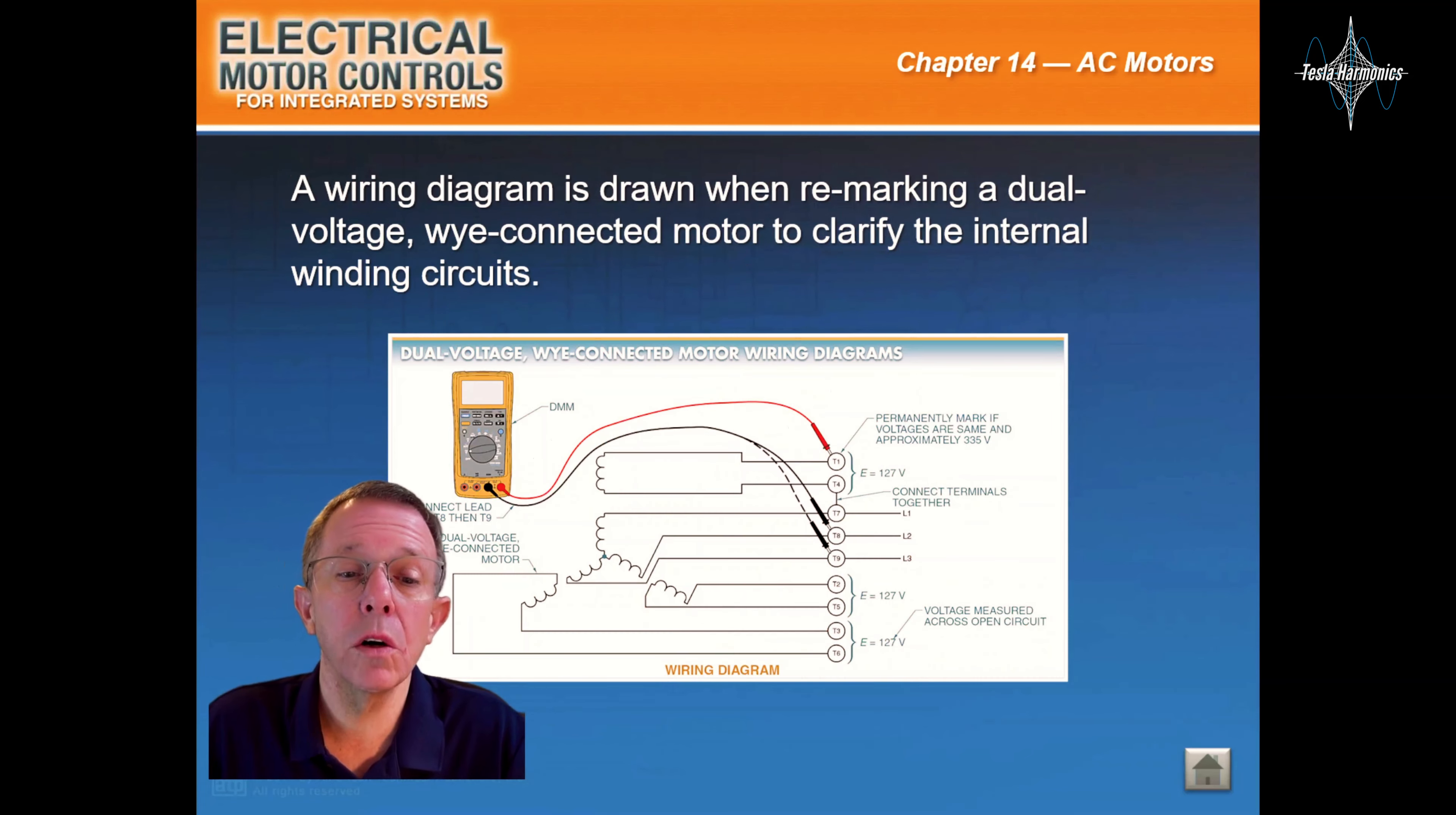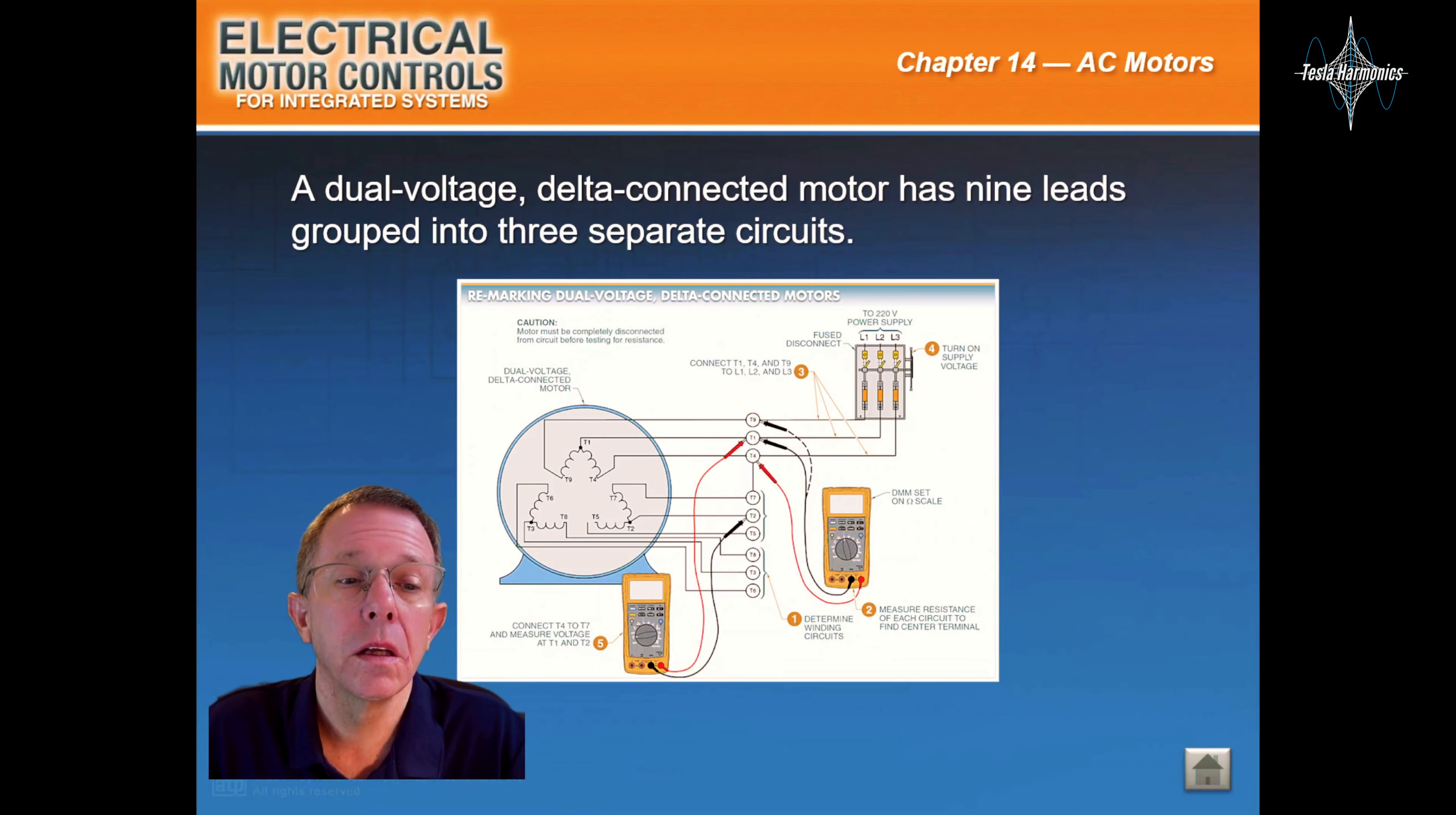A wiring diagram is drawn when remarking a dual voltage wye-connected motor to clarify the internal winding circuit. A dual voltage wye-connected motor has nine leads grouped into three separate circuits.